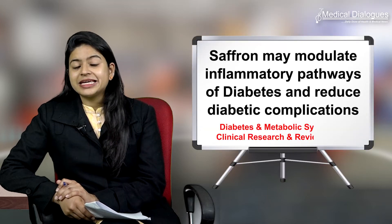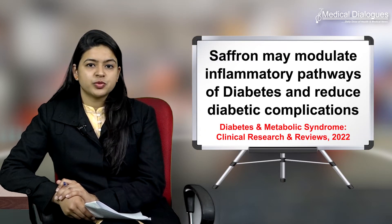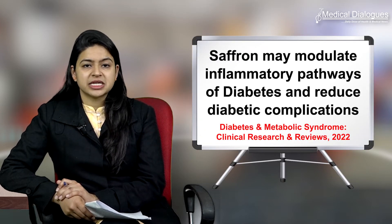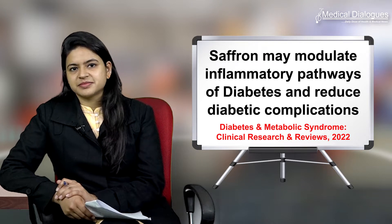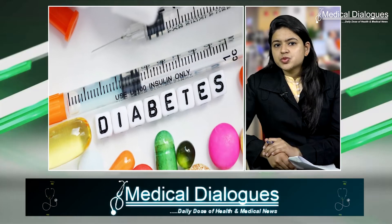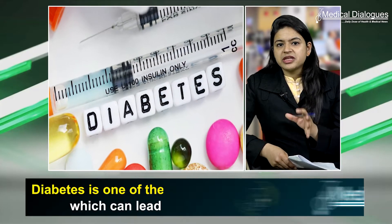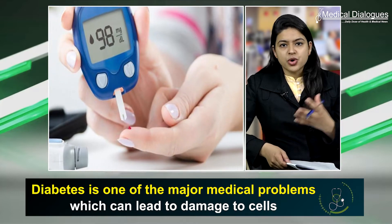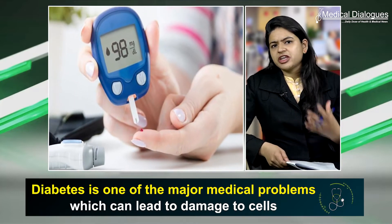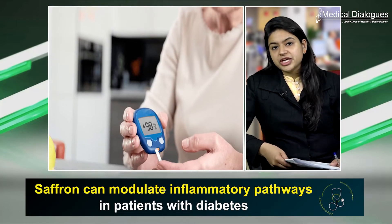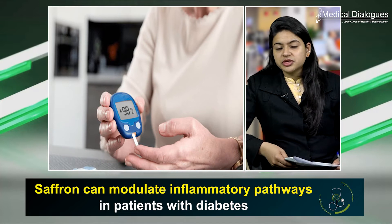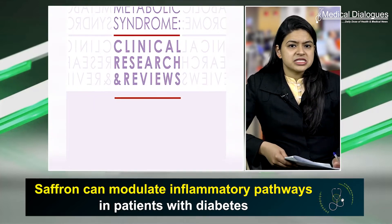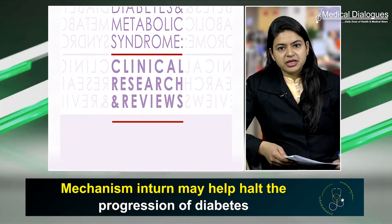Saffron may modulate inflammatory pathways of diabetes and reduce diabetic complications. Diabetes is one of the major medical problems which can lead to damage of cells or organs in various parts of the body. Its complications are reported from time to time, and a recent study published in the Diabetes and Metabolic Syndrome: Clinical Research and Reviews journal